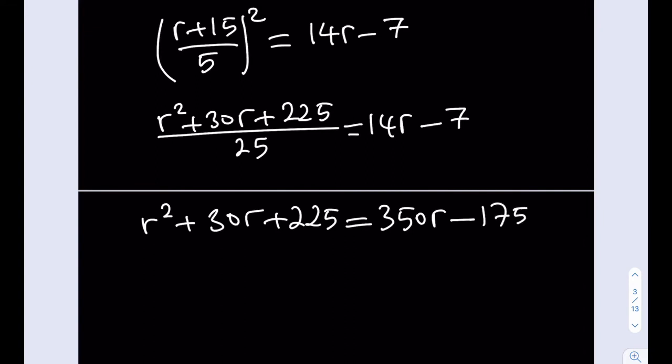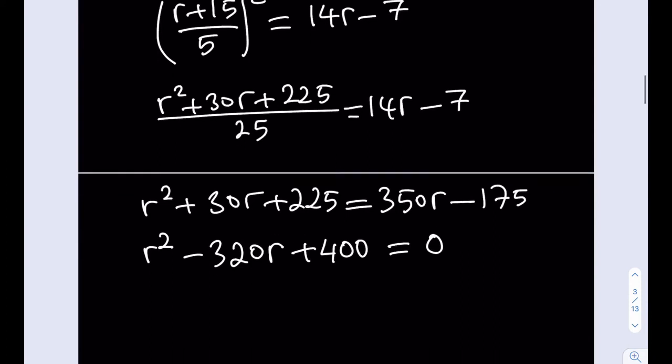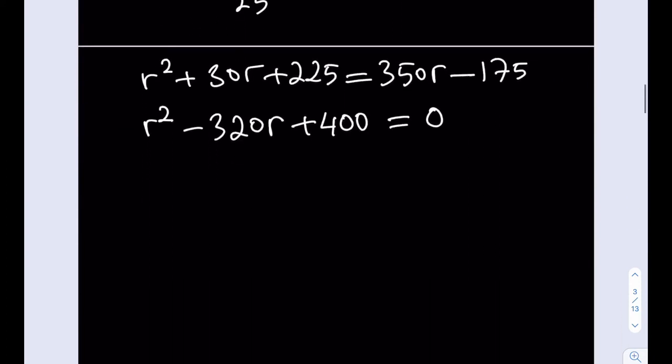Let's go ahead and put everything on the same side and solve for r. You're going to subtract 350 from 30, and if you do it the other way around, you get 320. So, that's going to be a negative 320r. 225 plus 175 is going to be 400. So, hopefully this equation has real solutions. It better have. And then we're going to solve for r.